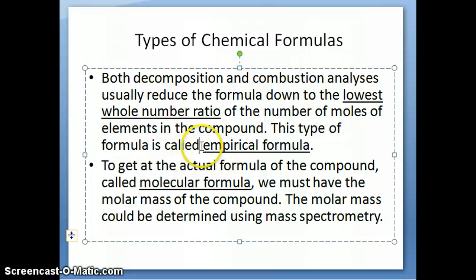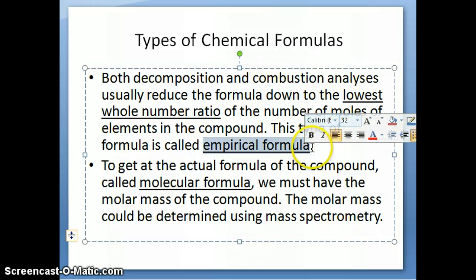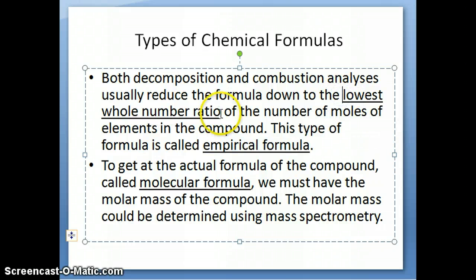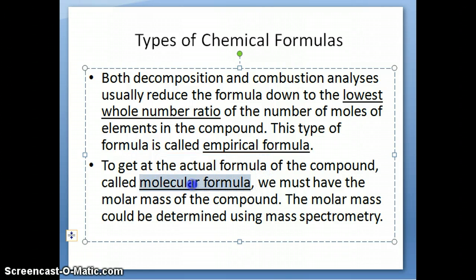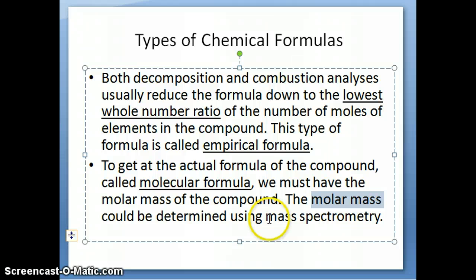A lot of times, the empirical formula you determine is not the actual formula of the compound, because getting the empirical formula means reducing the ratio to the lowest whole number ratio, and that may not be the actual formula. If you need the actual formula of the compound — which we often do — it is called the molecular formula. To get that, you need the empirical formula as well as the molar mass of the compound itself, which you can determine using mass spectrometry. We use both pieces of information to arrive at the molecular formula.